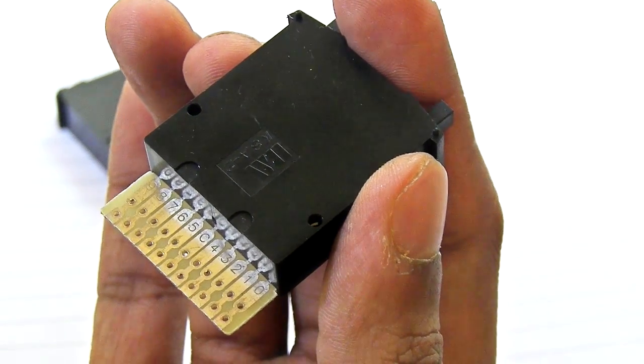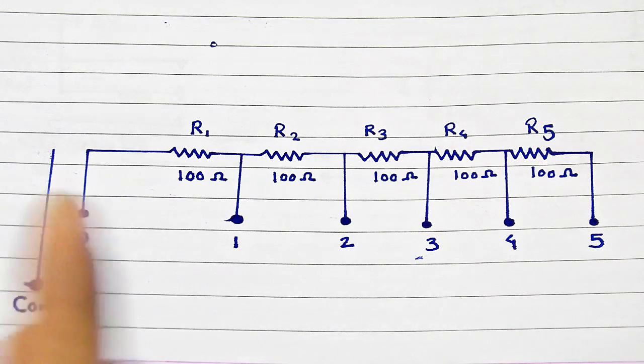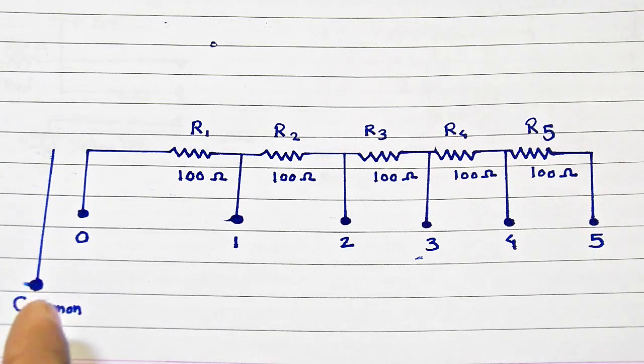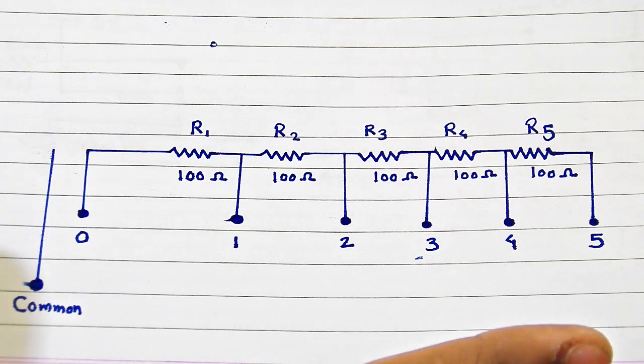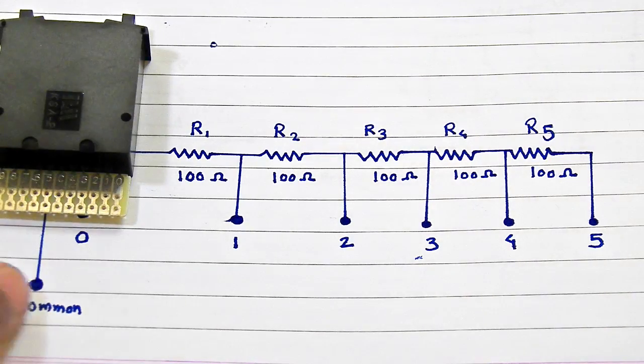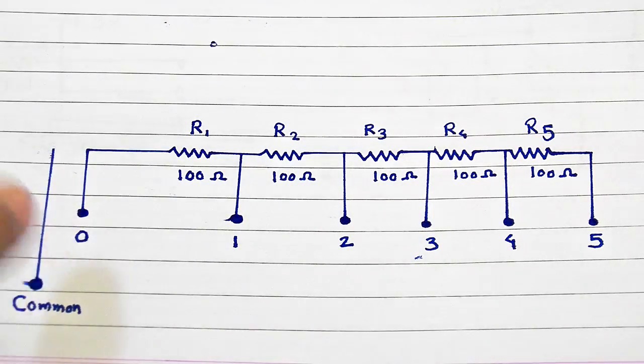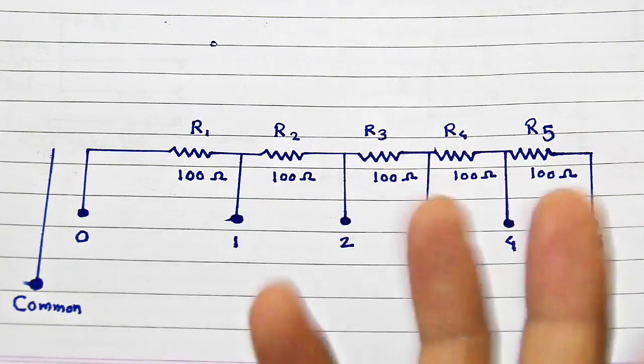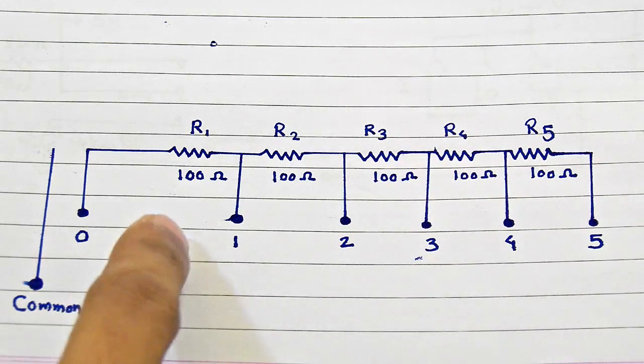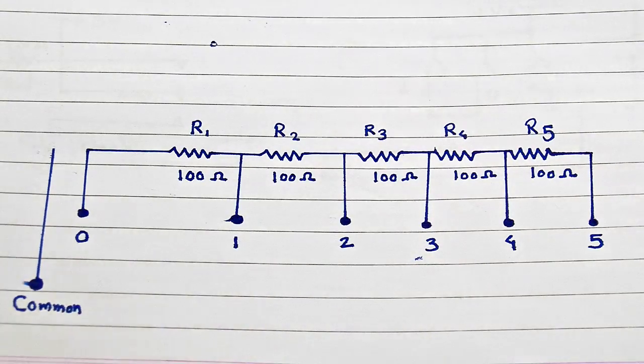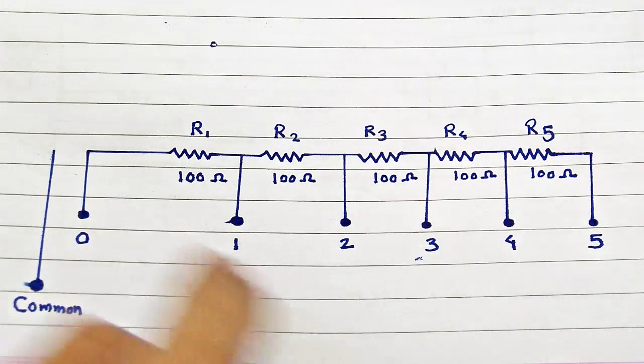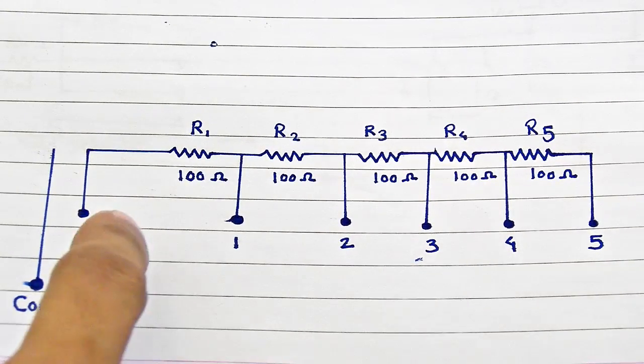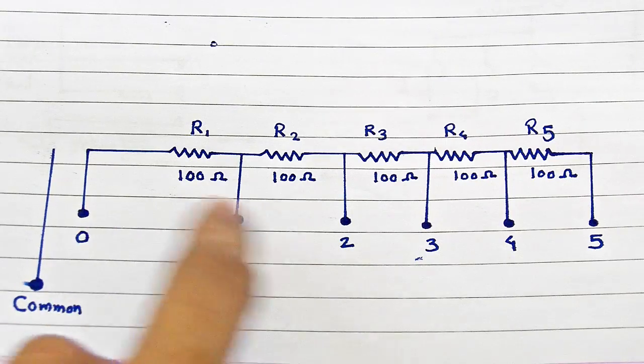Okay guys, so here is the circuit diagram that you are going to use to build this decade resistance box. If we take a look at the one place of the decade, it is the common terminal of your thumb wheel switch, and here is the zero, one, two, three, four, five, and so on to nine terminals. To make the 100 ohm part of this decade resistance box, you are going to use all 100 ohm resistors.